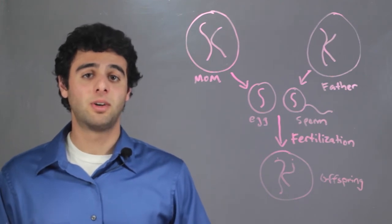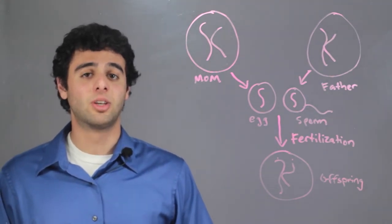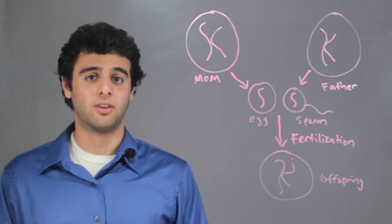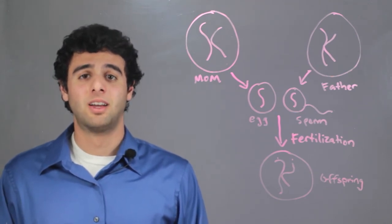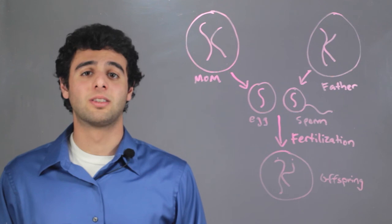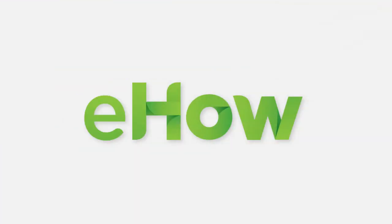So now the offspring has inherited gene pairs from the mother and the father. I'm Michael Mehta and this has been How Do Organisms Inherit Gene Pairs.